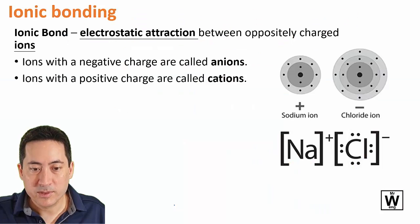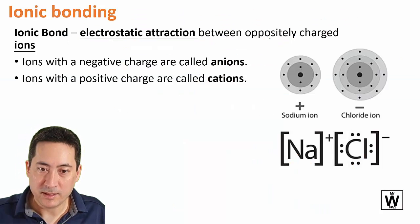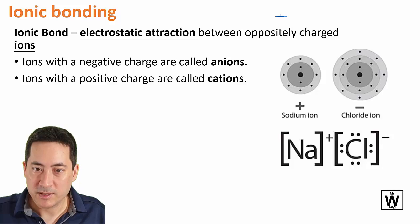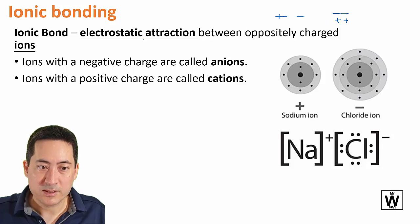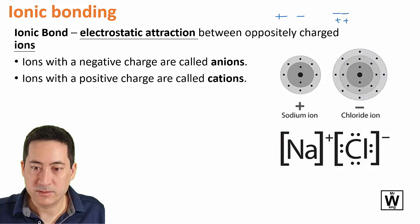So first of all there's ionic bonding. Now with all the bonding in chemistry, it's fundamentally quite simple. It's just positive attracted to negative, likes repel, so these two repel. And so what we're having here is a positive attracted to a negative.